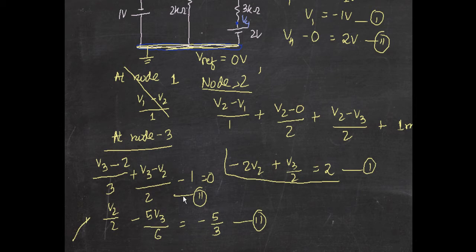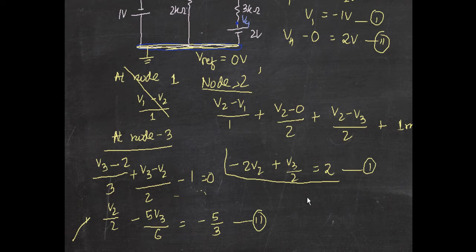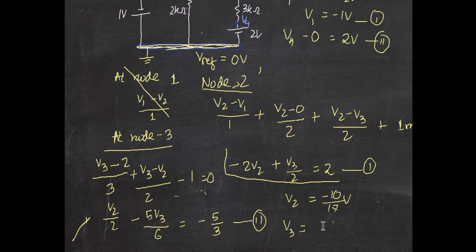So we now have two equations in v2 and v3. You can apply Cramer's rule or normal substitution or elimination method to solve these simultaneous equations. The final answers are: v2 equals minus 10/17 volts, and v3 equals 28/17 volts.